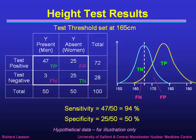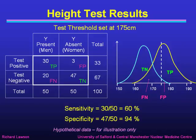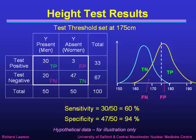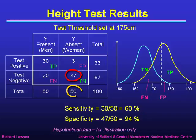We can move the threshold the other way and take it to 175 centimetres, which reduces the number of false positives down to 3, but increases the false negatives up to 20. So now we have a sensitivity of 30 over 50, which is 60%, and a specificity of 47 over 50, which is 94%. We have increased the specificity at the expense of reducing the sensitivity.